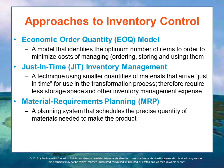Another approach is called Just-in-Time Inventory, or JIT. This is a technique that uses smaller quantities of material that arrive just in time for use in the transformation process. They therefore require less storage space and reduced inventory management expenses. Just-in-Time Inventory minimizes inventory by providing an almost continuous flow of items from suppliers to the production facility — trucks arriving all day long with inventory that processes through the plant within a couple of hours, so less needs to be stored in the warehouse.